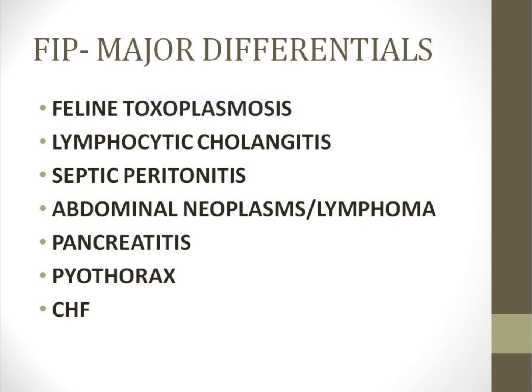Pancreatitis can cause weight loss, anorexia, and jaundice, but it can be easily diagnosed with a PLI test. In pyothorax, the effusion shows a high cell count and degenerate neutrophils, and may show intracellular bacteria — allowing differentiation. In congestive heart failure, there will be dyspnea and pleural effusion, but peritoneal effusion is comparatively rare, there will be no waxing and waning fever, and a heart murmur may be present.